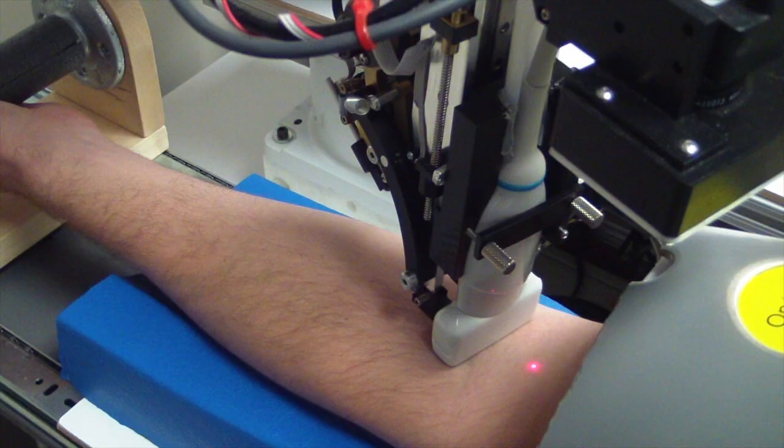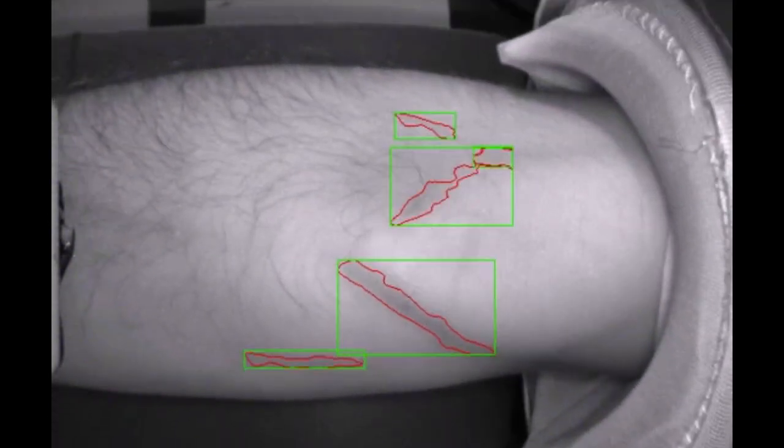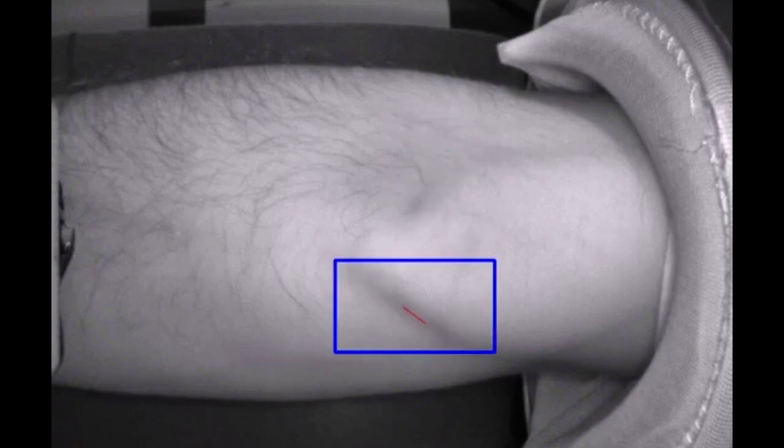After the patient puts his arm through the archway, an infrared light illuminates his inner elbow for a camera. Software matches what the camera sees against a model built from thousands of vein images, looking for a suitable vein.